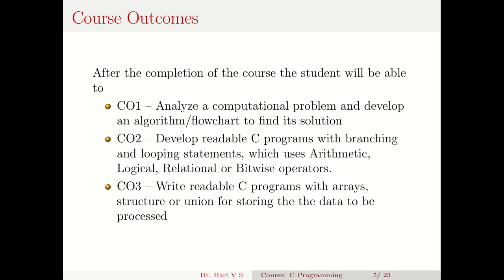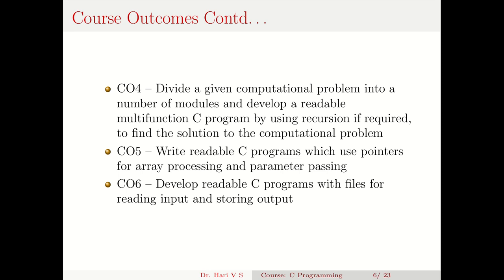CO2 is to develop readable C programs with branching and looping statements which use arithmetic, logical, relational, or bitwise operations. CO3 is to write readable C programs with arrays, structures, or unions for storing the data to be processed. CO4 is to divide a computational problem into modules and develop a readable multi-function C program using recursion if required. CO5 is to write readable C programs which use pointers for array processing and parameter passing. CO6 is to develop readable C programs with files for reading input and storing output — that is file operations.